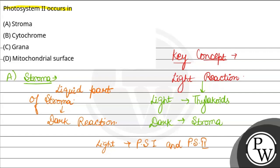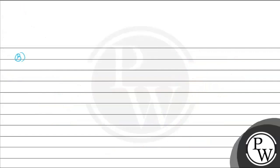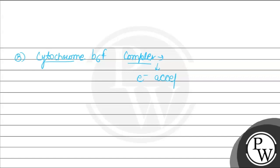यह दोनों ही light absorb करती हैं, और electron को आगे move कराती हैं. Option 2nd है cytochrome. जो cytochrome होता है, यह cytochrome B6F complex होता है. यह भी thylakoid membrane में होता है, और यह electron transport chain का एक part है — यह electron acceptor होता है.